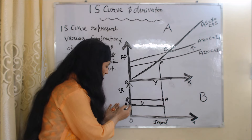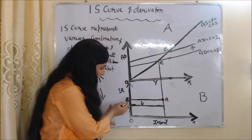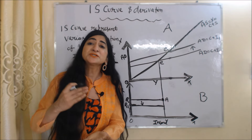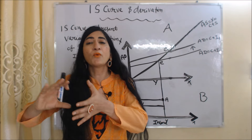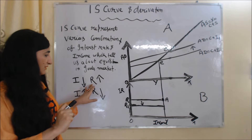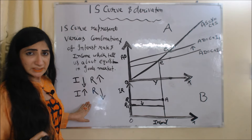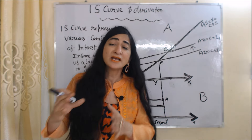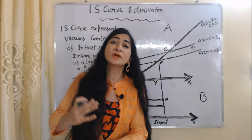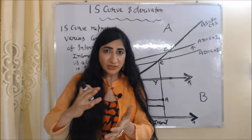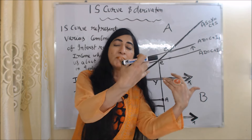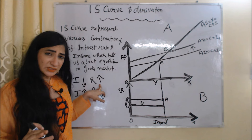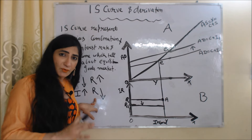Now suppose interest rate falls from OR to OR1. When interest rate falls, investment increases because investment and interest rate have an inverse relation. When interest rate is very high, people borrow less money from banks for investment purposes. On the other hand, when interest rate is low, people borrow more money from banks for investment purposes. So investment and interest rate have an inverse relation: when interest rate increases, investment falls; when interest rate falls, investment increases.